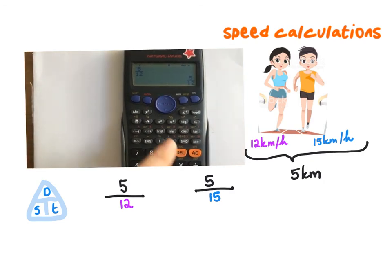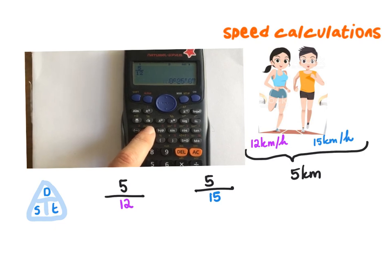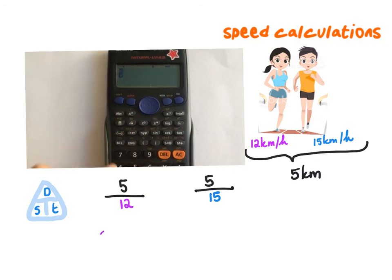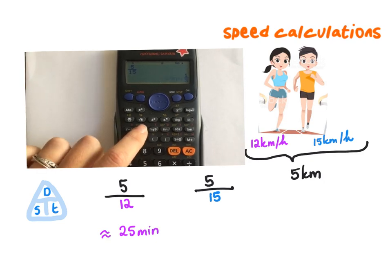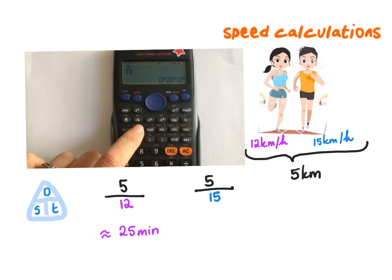So for Carla, if I type in 5 over 12, that's a fraction, but I can convert it to zero hours, 25 minutes and zero seconds. Meaning that Carla did the race in 25 minutes. Doing the same for Dion, we see that he did it in zero hours and 20 minutes. So Carla did the parkrun in 25 minutes, while Dion did the parkrun in 20 minutes.